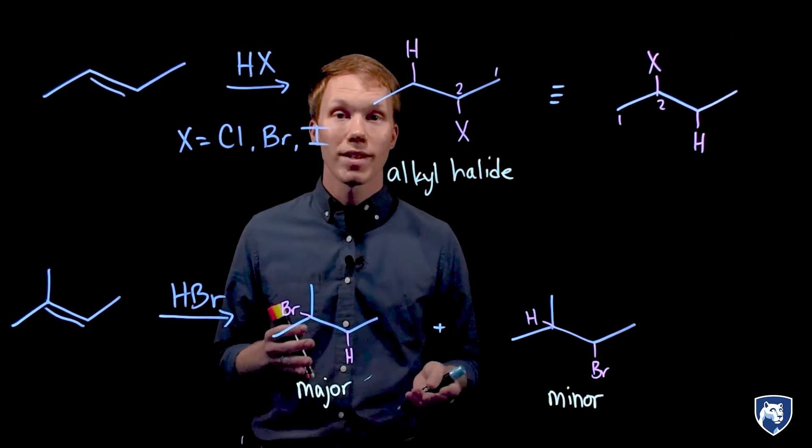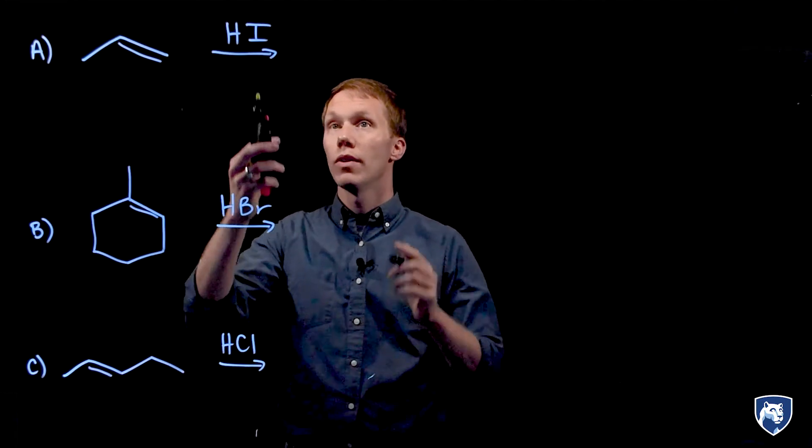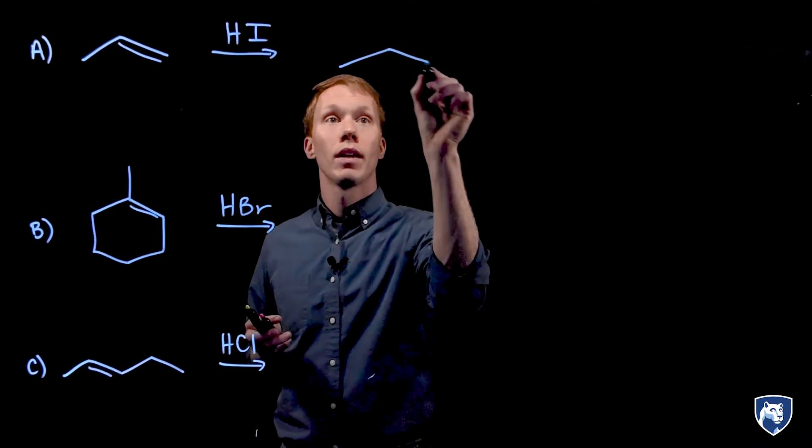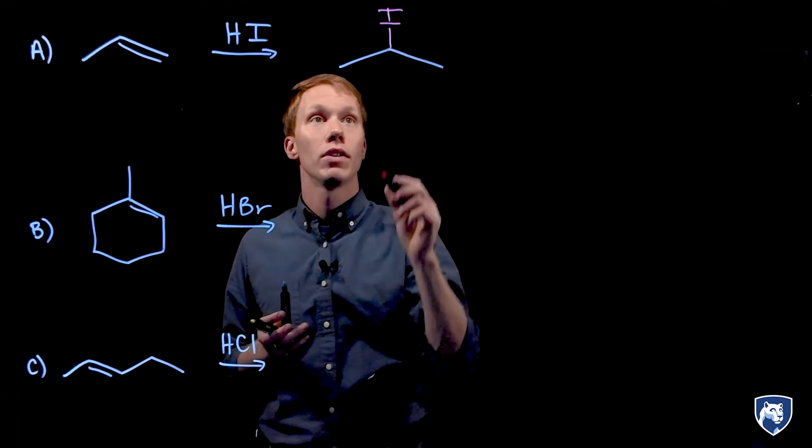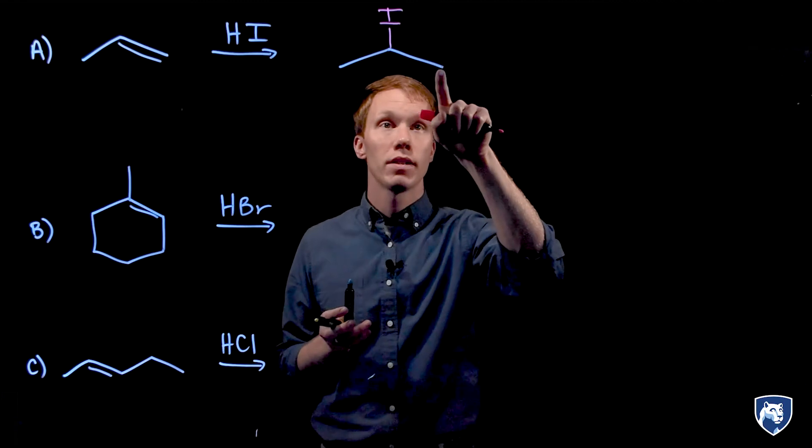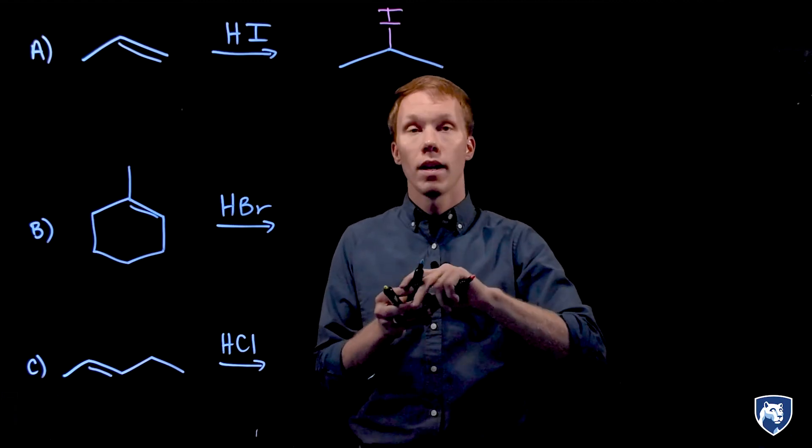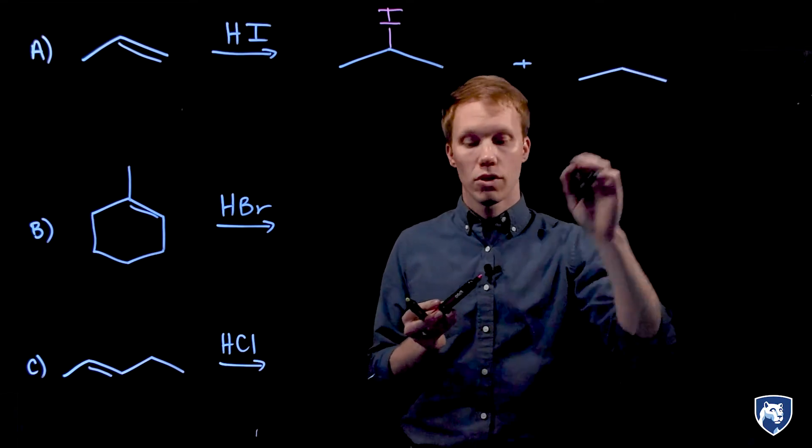Let's look at a couple more examples together. Let's get started with example A. We have propene reacting with HI. So the H and the I are going to add across the double bond. I can add the iodine to the more substituted carbon, that is the secondary site here, and the hydrogen to the less substituted side. Hydrogens are implied by the bond line drawing, so it is not necessary to draw them in here.